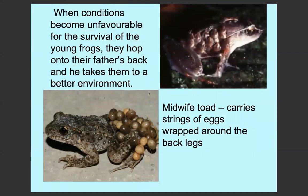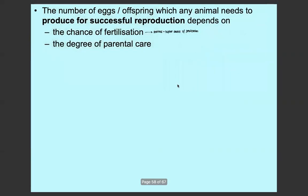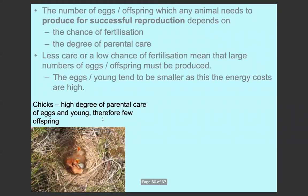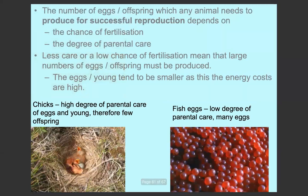Frogs are also an example of animals that may show parental care. In unfavourable conditions, young frogs can hop onto their father's back and he can take them to a better, safer environment. The midwife toad also carries eggs wrapped around her back legs to protect them. The number of eggs or offspring any animal needs to produce for successful reproduction depends on the chance of fertilisation — internal fertilisation means a higher chance, so fewer eggs need to be produced — and on the degree of parental care. Higher parental care means a higher chance of surviving to sexual maturity, so fewer eggs or offspring are needed. If there's a low chance of fertilisation, there must be a large number of eggs, and the eggs tend to be smaller because it costs high energy to produce so many.